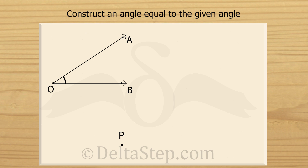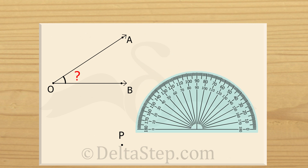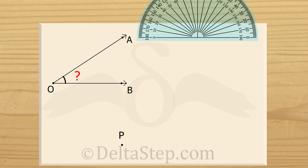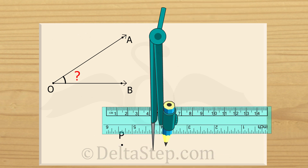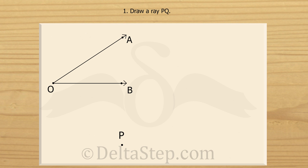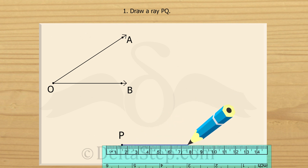We have been given an angle formed by two arms but we don't have the measure of the angle. We could just take a protractor and measure the angle and redraw another angle with the same measure. But here we will replicate the angle using a ruler and a compass and some basic properties in geometry. The first thing is to draw a ray PQ with endpoint at P.